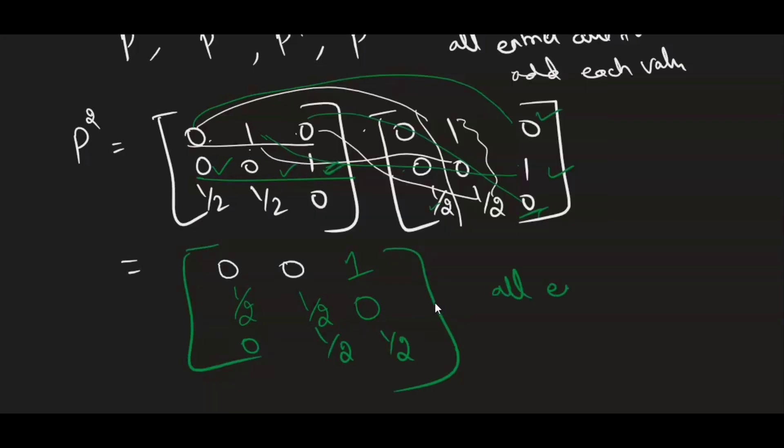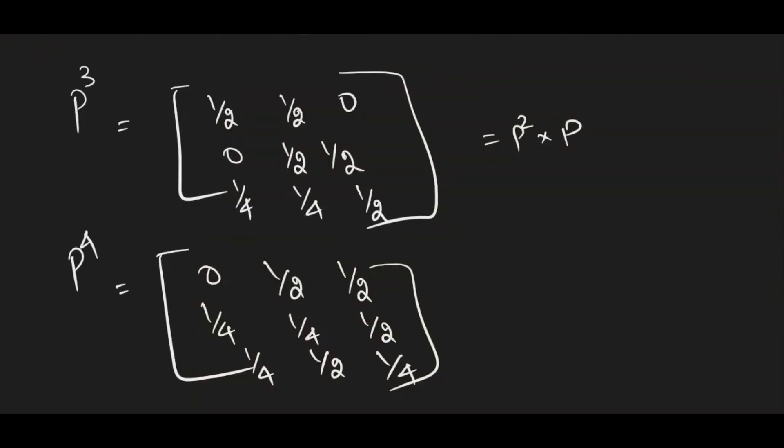So here all entries are positive. Just check in each time all entries are positive. And if you add all the values, 0+0+1, you are getting 1. Similarly, second one, 1/2+1/2+0, again 1. So it means the sum of entries is also 1. So now let us find P² and P³. We already got P², now let us see for P³.